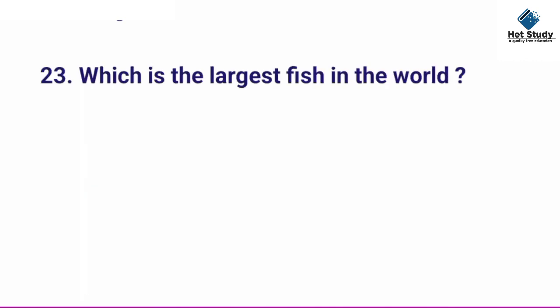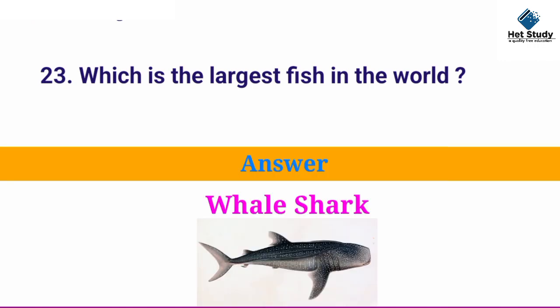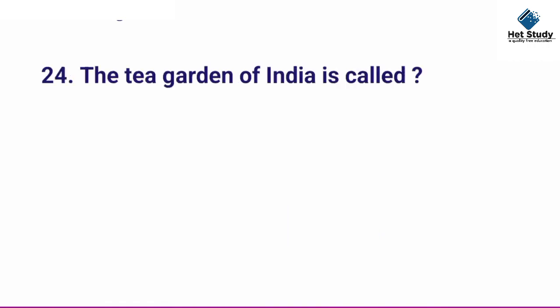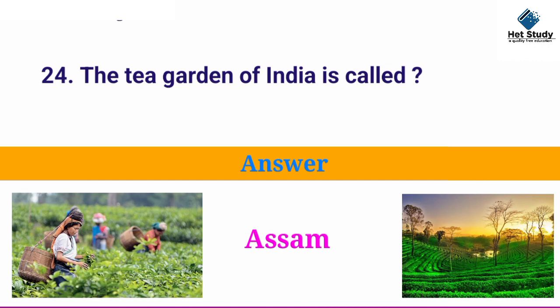Which is the largest fish in the world? Answer: whale shark. The tea garden of India is called? Answer: Assam.